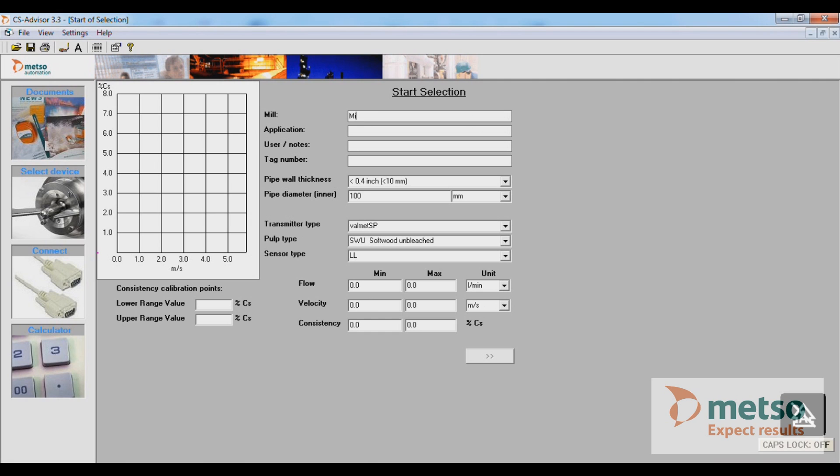We're going to fill in the mill name, we're going to say it's Mill A. Our application is softwood feed tank. And of course, you can put a tag number in there if you like. In this case, we're not going to. In our scenario, we're going to use a six-inch pipe. The fiber is going to be softwood unbleached, which has already been selected. And the LL blade is selected already. It matches it with the fiber type.